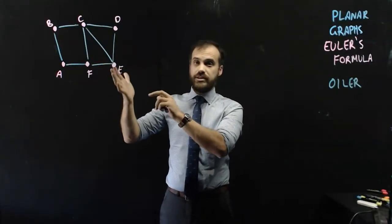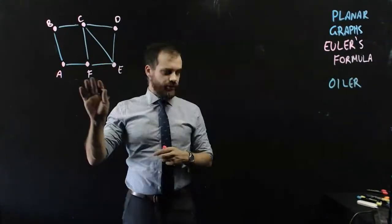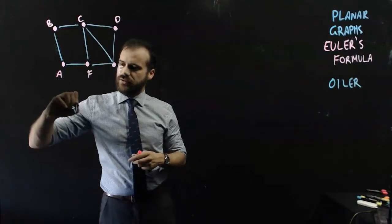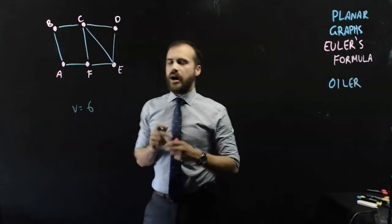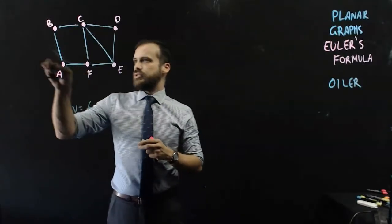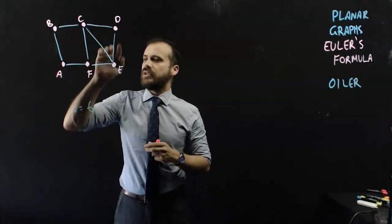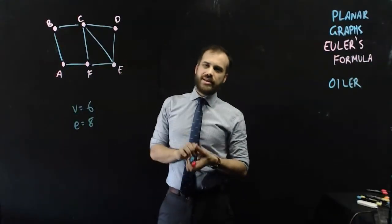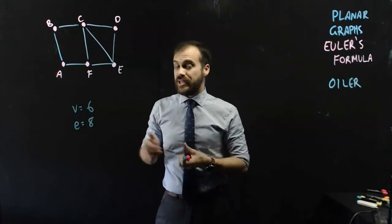I've got this planar graph like this. I'm going to count a few things. First up, the vertices. One, two, three, four, five, six vertices. I'm going to count the edges. One, two, three, four, five, six, seven, eight.